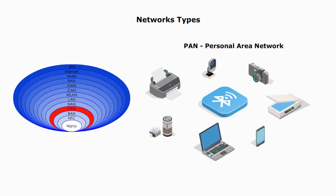PAN, a personal area network, is a computer network of personal work space. A PAN provides data transmission among devices such as computers, smartphones, tablets, and PDAs.